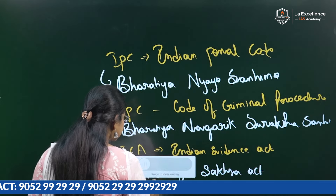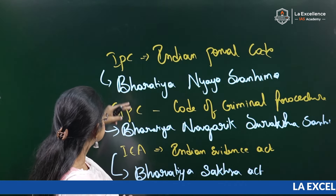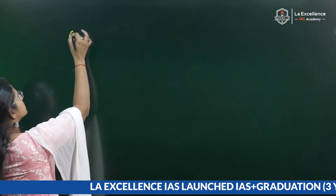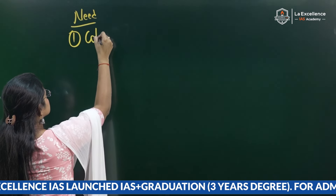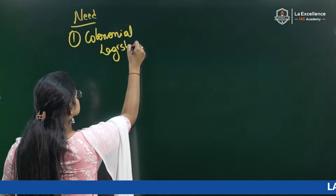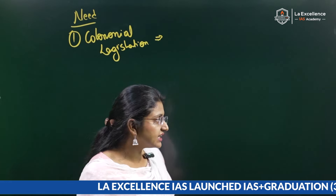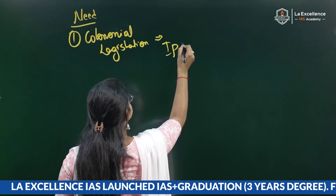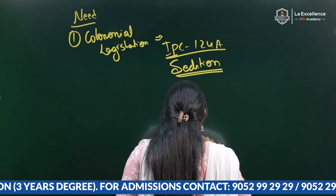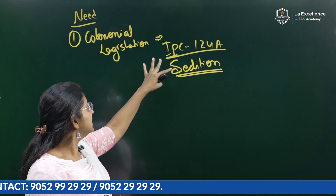Now let us look at what is the need for this replacement. The IPC, CrPC, and Indian Evidence Act are three colonial legislations. These were used to suppress the dissent of Indians and also promote British rule in India. For example, IPC Section 124A talks about sedition — it criminalizes sedition, and most freedom fighters were charged under this section. So we need to change these legislations.